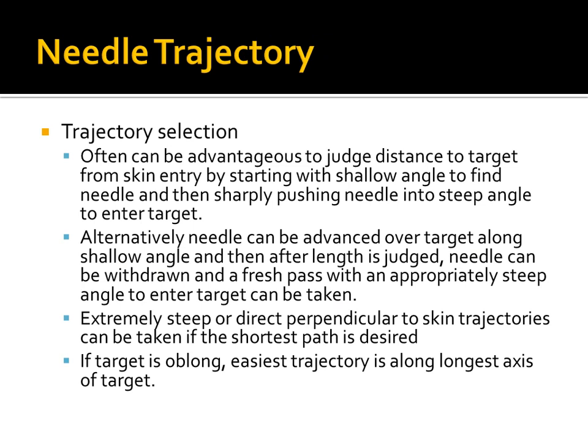For trajectory selection, it can be advantageous to judge the distance to the target from the skin by starting with a shallow angle. You start very shallow, push the needle close to the skin, and end up with a picture where your needle tip is on top of the object you want to enter — but you can see your needle very easily. Then you know your needle is perhaps one or two centimeters above your target. In one motion, you pull the needle all the way back, adjust your angle exactly as needed, and shove it all the way forward into the target without waving the needle side to side.